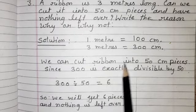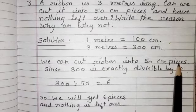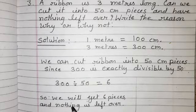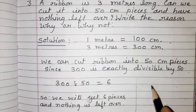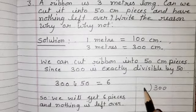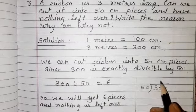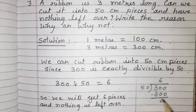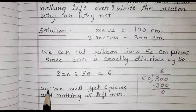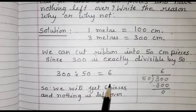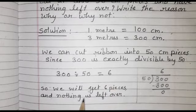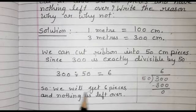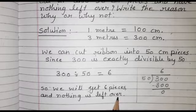We can cut the ribbon into 50 centimeter pieces since 300 is exactly divisible by 50. 300 divided by 50: 50 times 6 equals 300. The remainder is 0 and the quotient is 6. So we will get 6 pieces and nothing is left over, because the remainder is 0.